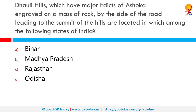Dhauli Hills, which have major edicts of Ashoka engraved on a mass rock by the side of a road leading to the summit of the hills, are located in which among the following states of India? The Dhauli Hills are famous for the Shanti Stupa or peace monument first constructed by the great Emperor Ashoka as a mark of the Buddhist message for worldwide peace. It's in Orissa.